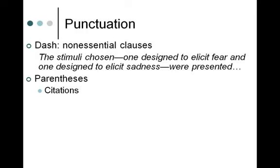In terms of parentheses: most often you'll use them with citations — setting off a year, author's name, or page number. You might also use them with abbreviations. The first time you use an abbreviation, you have to spell the whole thing out. For example: the Diagnostic Statistical Manual, Fourth Edition, Text Revision (DSM-IV-TR). After that, you can use the abbreviation. But the first time, you must spell the whole thing out and set off the abbreviation in parentheses.